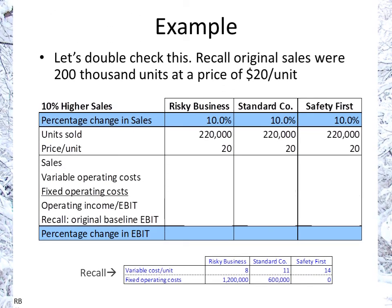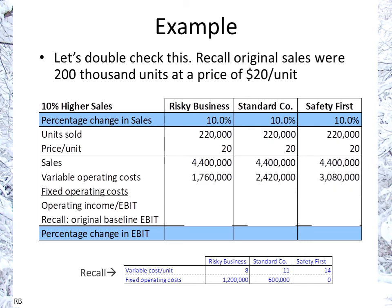Let's double-check that. Instead of 200,000 units, we now sell 10% more — 220,000 units. Sales are all 220,000 times $20, equaling $4.4 million. Variable operating costs are $8, $11, and $14 times 220,000. After subtracting fixed operating costs of $1.2 million, $600,000, and $0, we get operating incomes of $1.44 million, $1.38 million, and $1.32 million respectively.